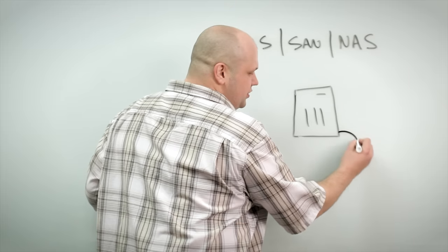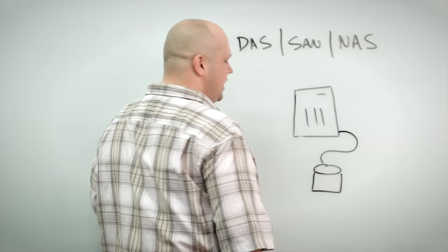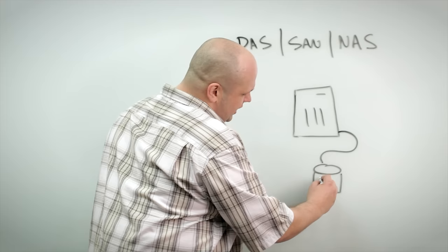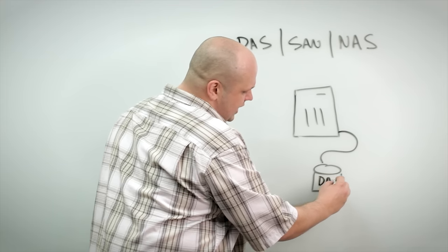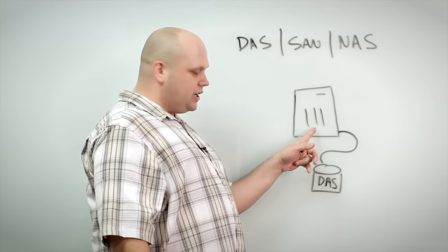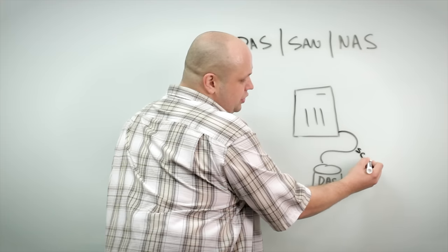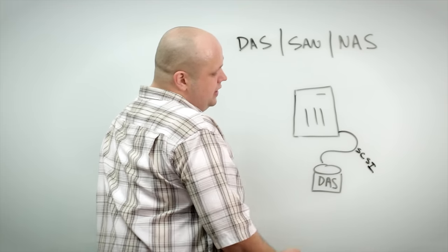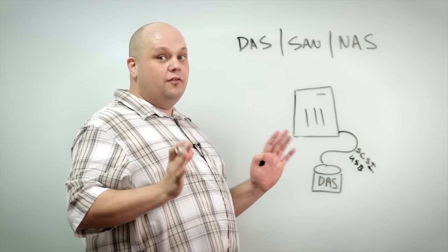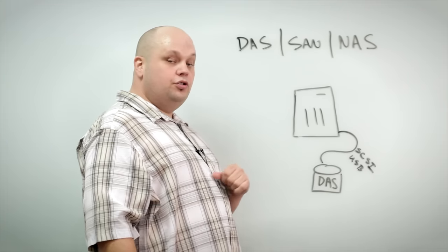So the simple next step is to plug something directly into your server that's some type of storage media. In this case, we have what we call directly attached storage. Directly attached storage is storage that you physically connect to your box. It could be over something like a SCSI connection, small computer systems interface. It could be across something like USB or Firewire or any number of other technologies can be used to directly attach storage to your server.